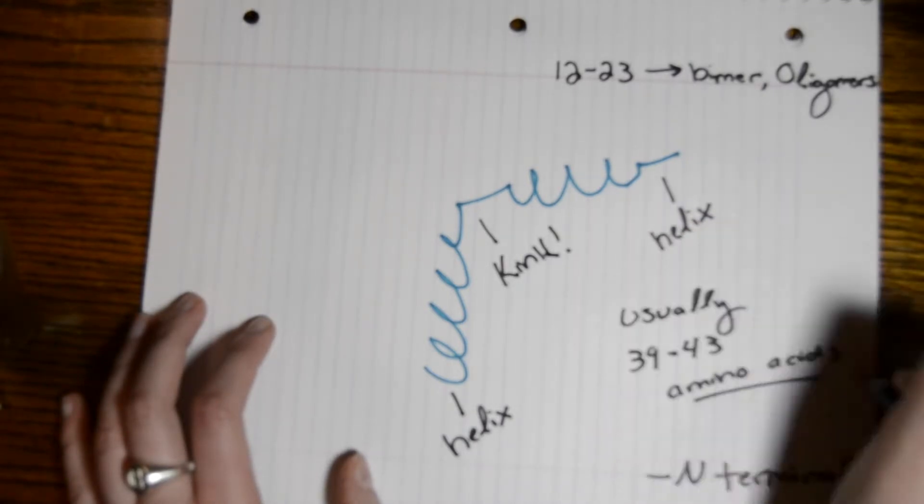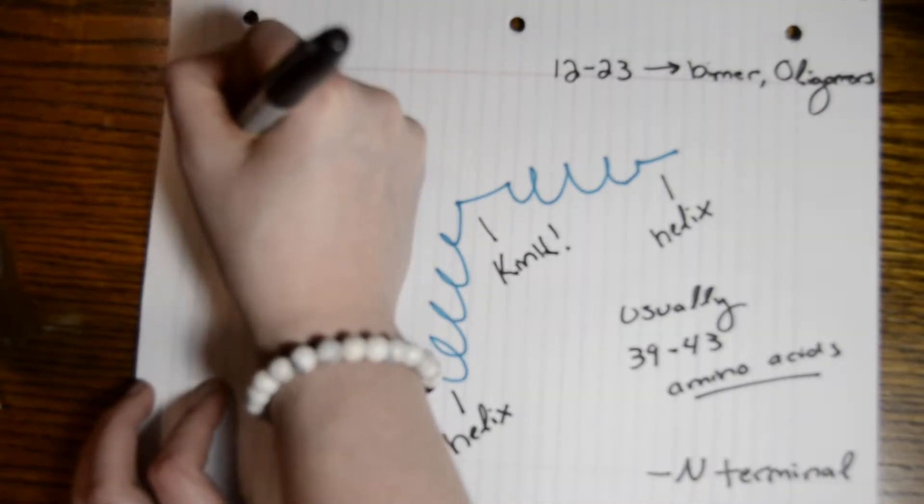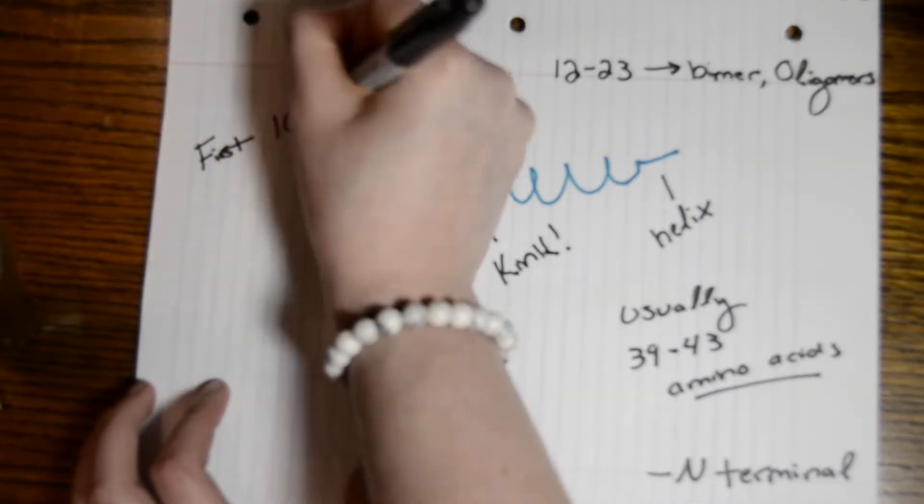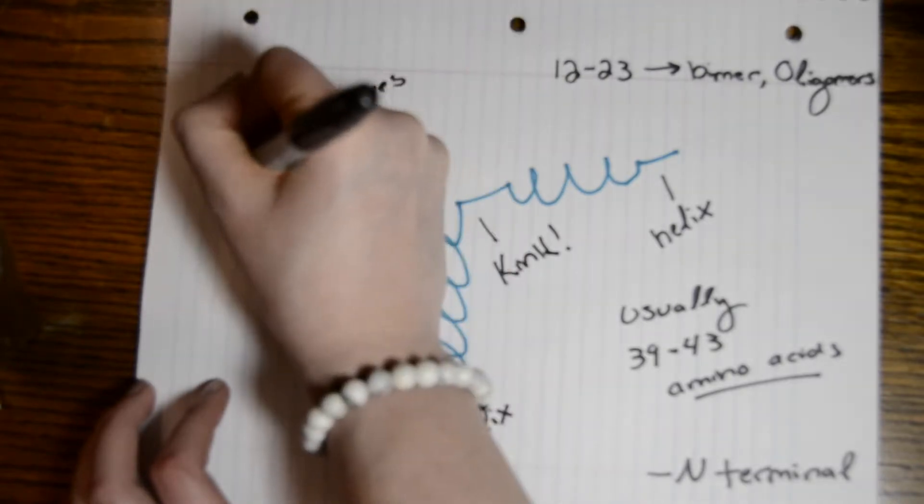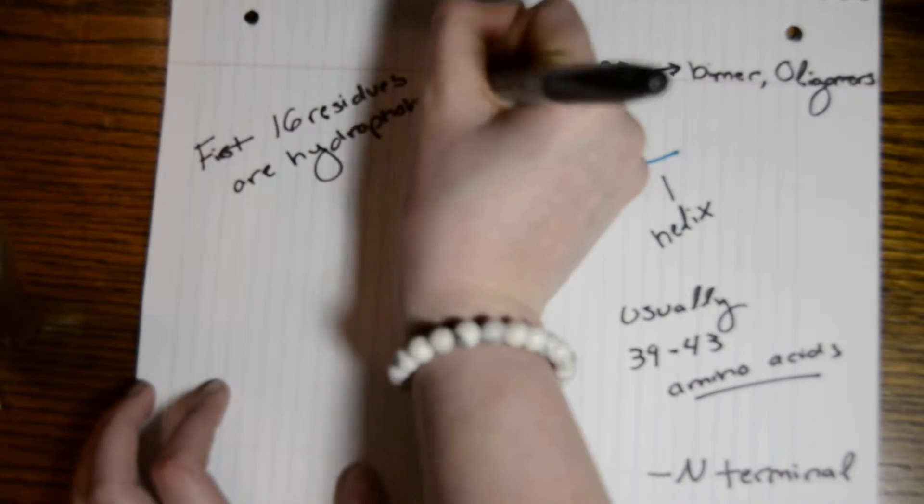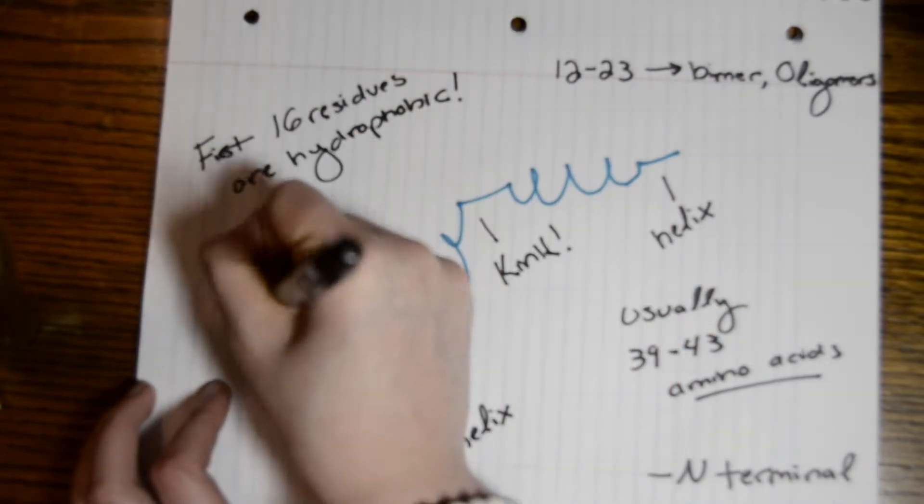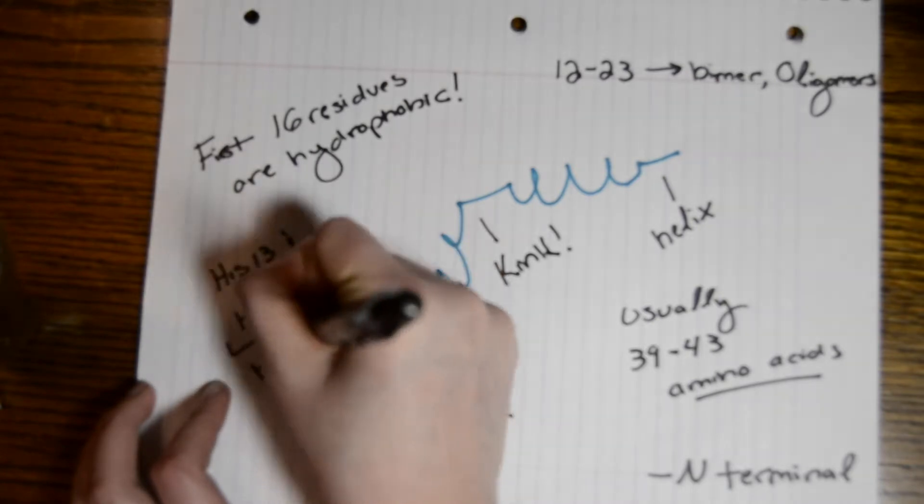Residues 12 through 23 are dimers and/or oligomers that serve as a self-recognition region. The first 16 residues are hydrophobic. HIS-13 and HIS-14 are binding sites for Cu2+, or copper, which is an important factor later in neuronal toxicity.